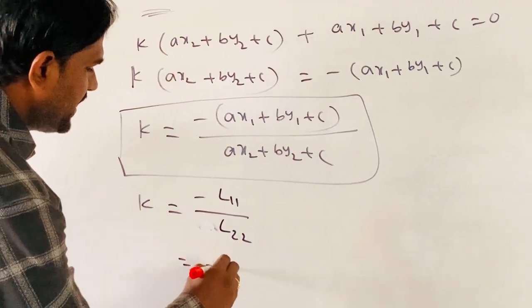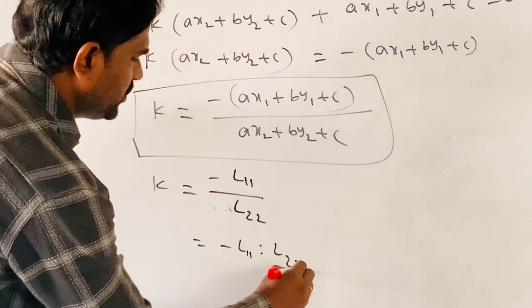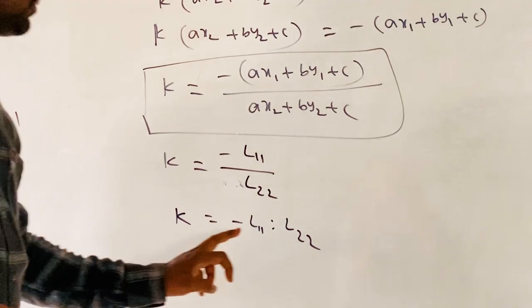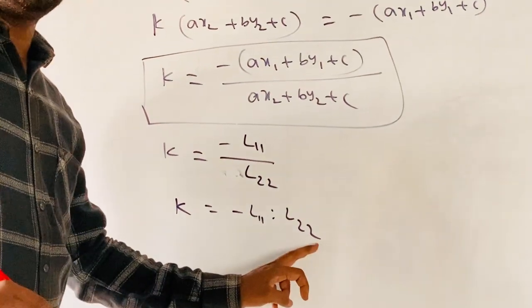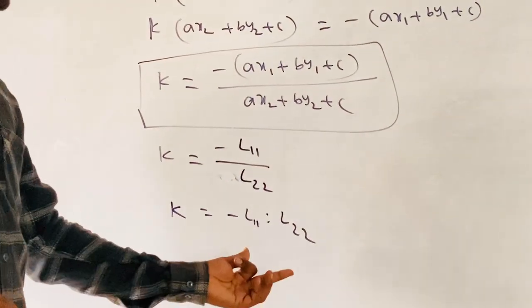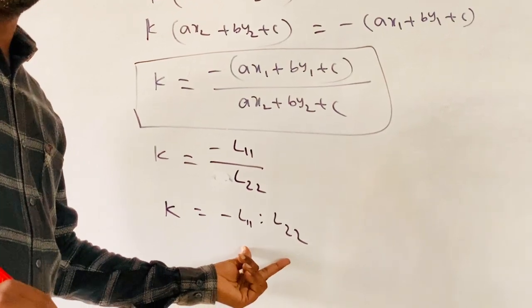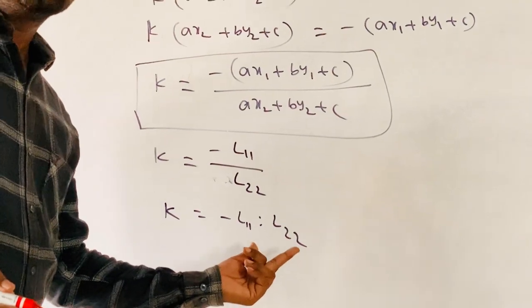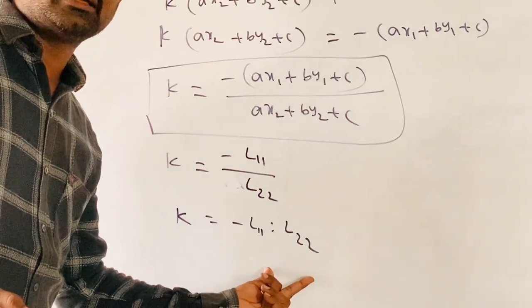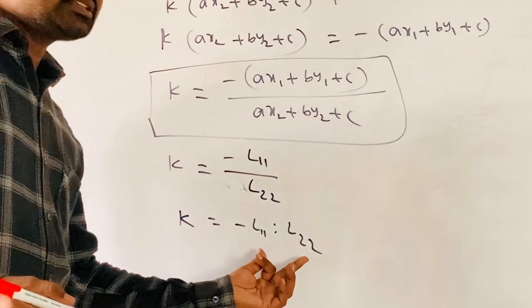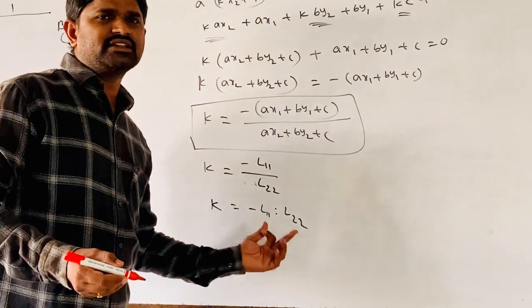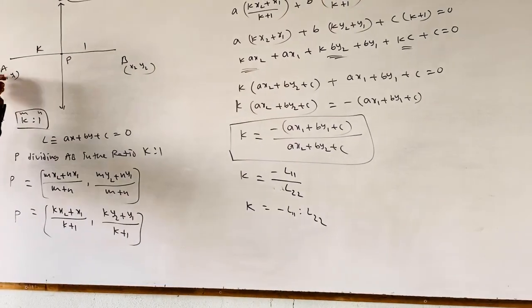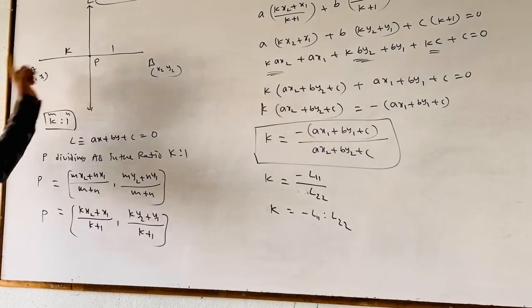Observe, K equals minus L11/L22. If the notations have the same sign—both plus or both minus—then the two points A and B lie on the same side of the line. If L11 and L22 have different signs—one plus and one minus—then A and B are on opposite sides of the line.